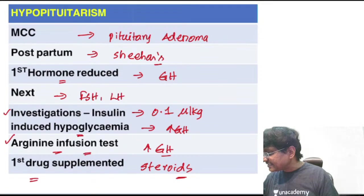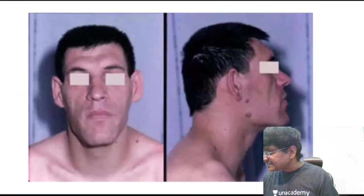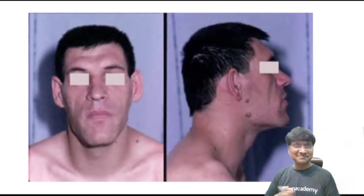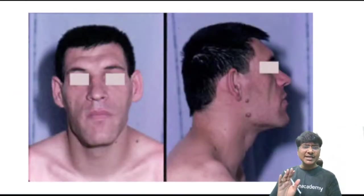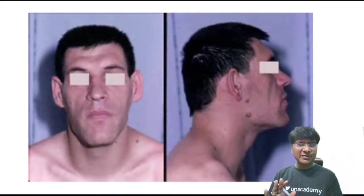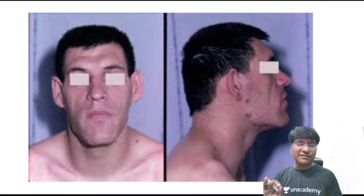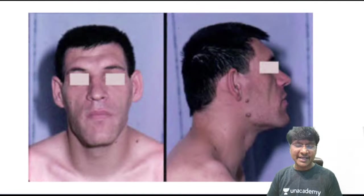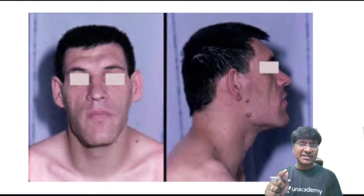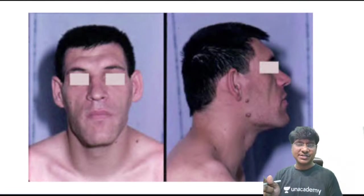Now let's discuss acromegaly — this image shows the characteristic appearance. Acromegaly is an increase in growth hormone after fusion of bones. You have both bony manifestations and soft tissue manifestations.